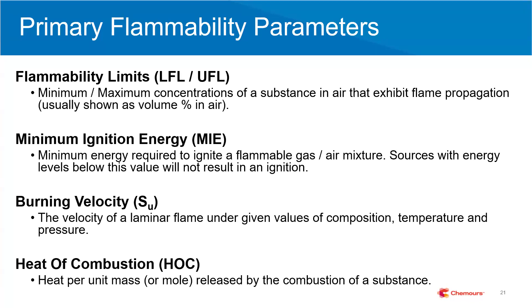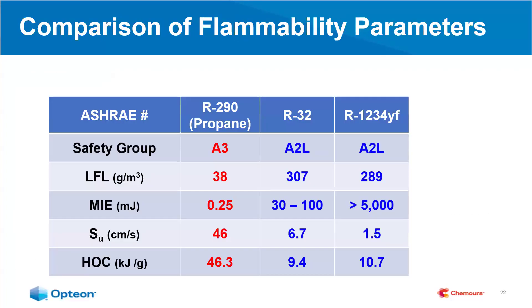If you do get an ignition, then you want to be concerned about burning velocity and heat of combustion. Burning velocity describes how quickly a flame will propagate for a given composition, temperature, and pressure — the faster it propagates, the more severe the ignition event and the higher the rate of pressure rise. Heat of combustion describes how much heat is given off when the refrigerant burns. Now let's take a look at a comparison of these flammability parameters.